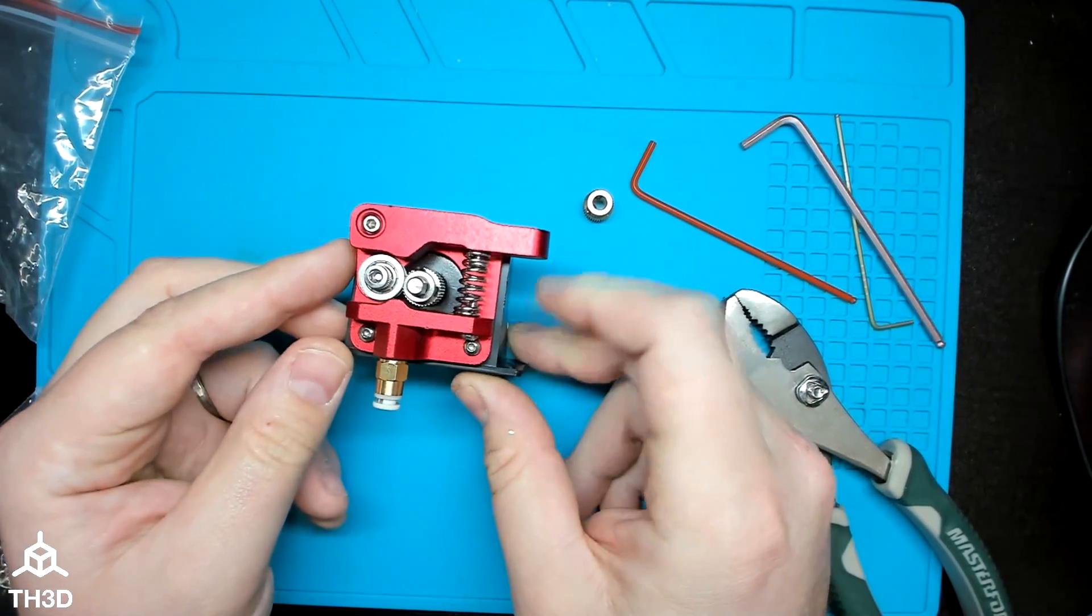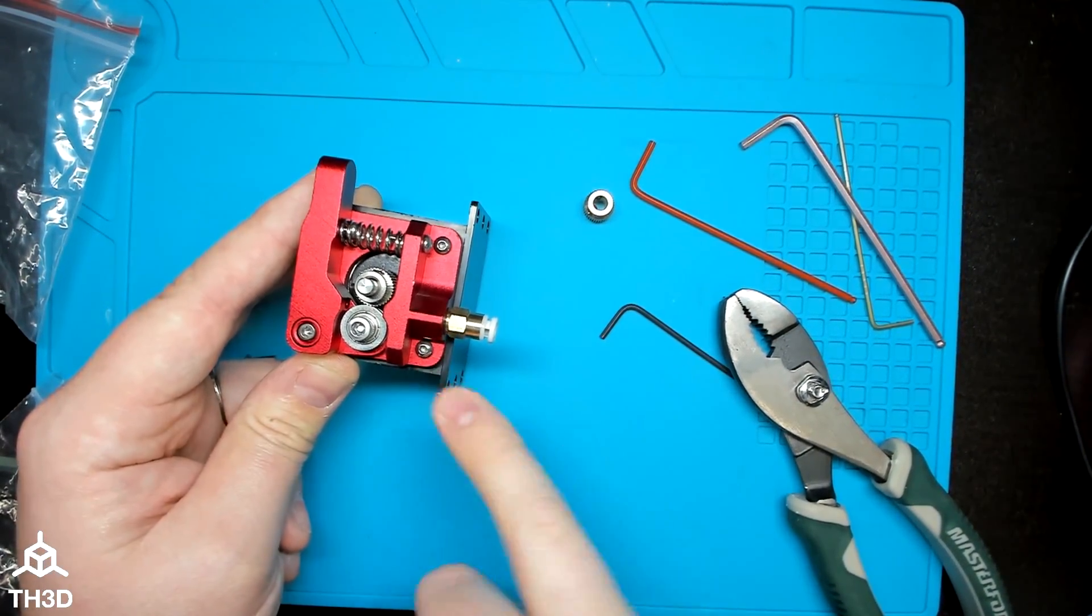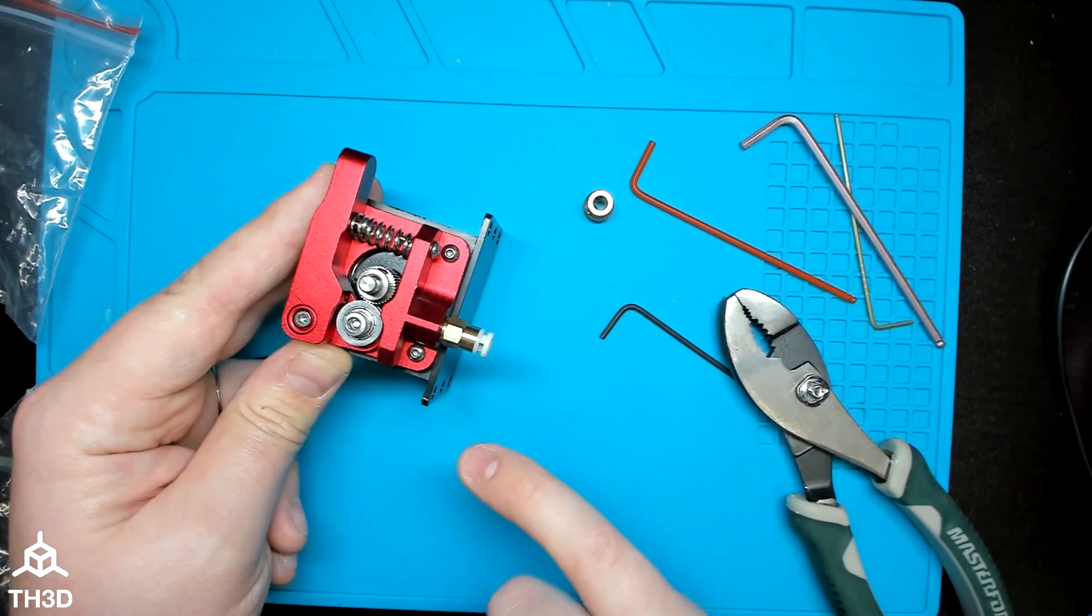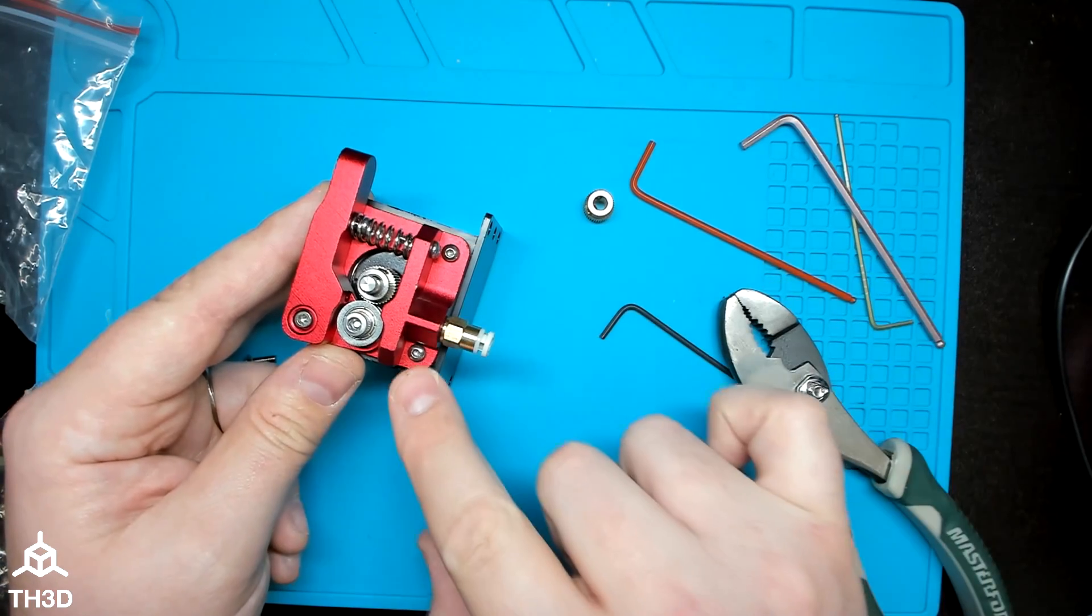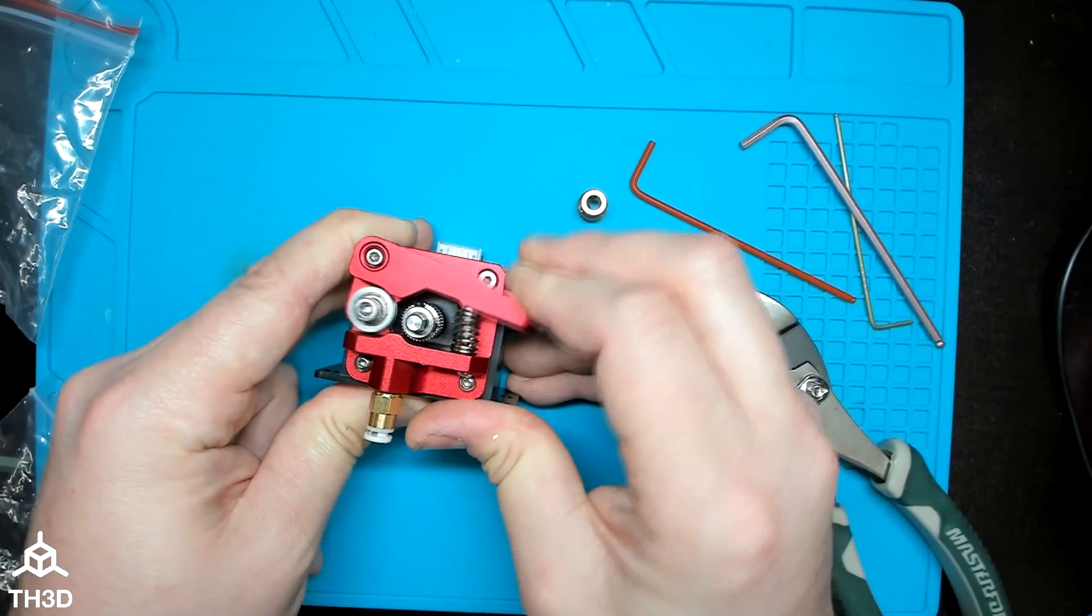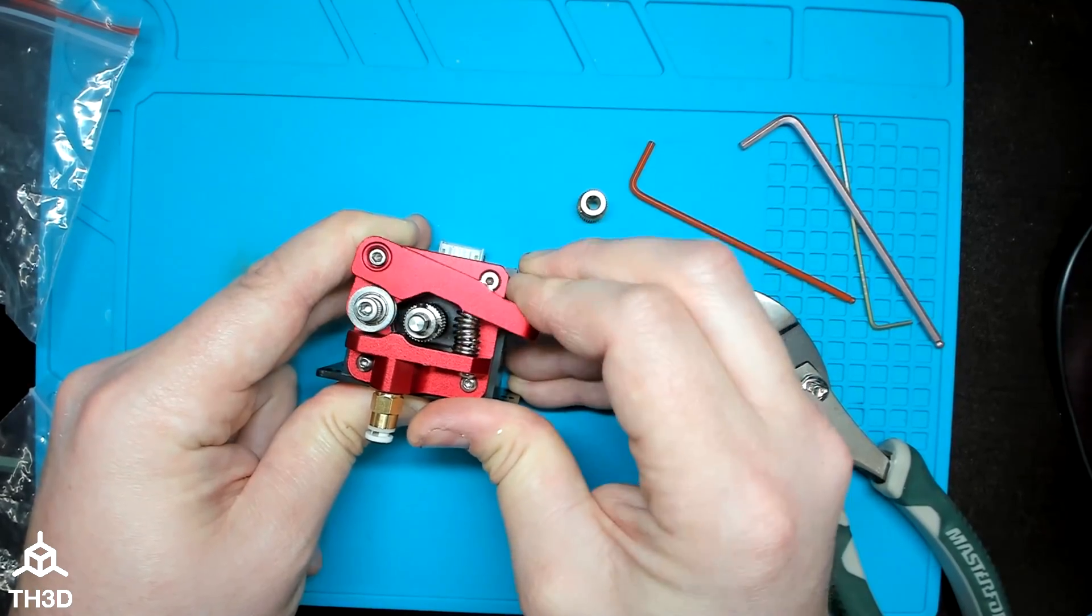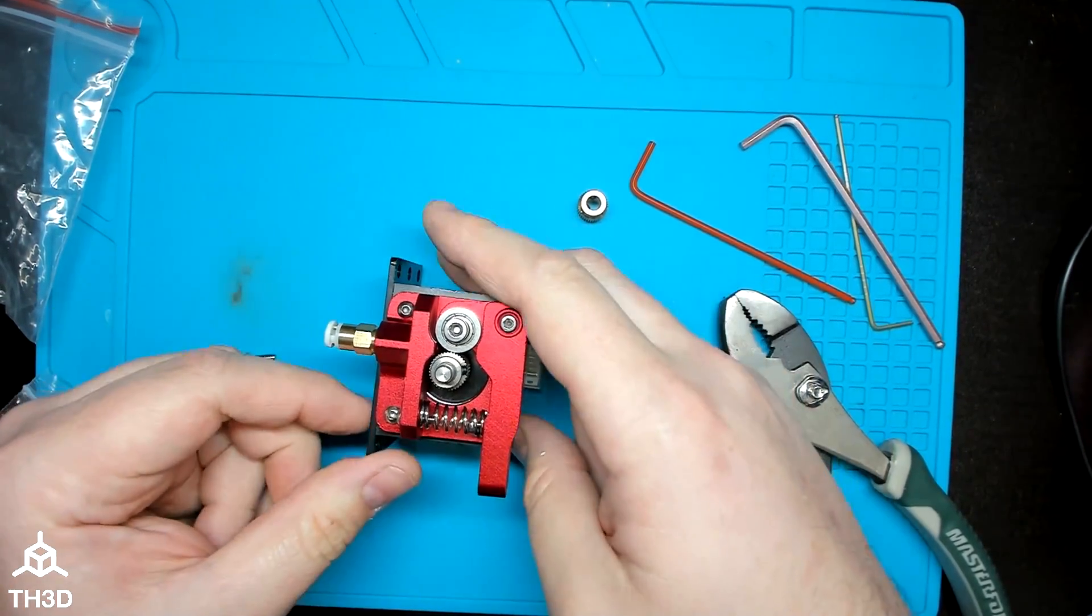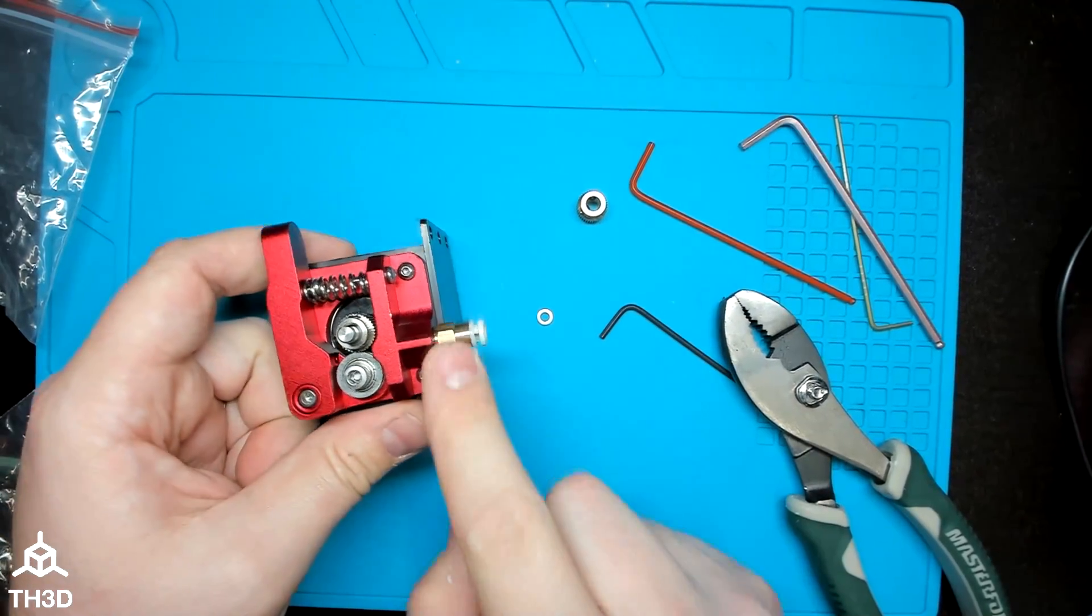And that's it. It's that simple. If for some reason your stock extruder had really long screws and these aren't long enough, you can go ahead and reuse your existing screws from your original extruder. These are just standard M3 holes. But that's it. We've got a nice tight arm here with plenty of spring tension.